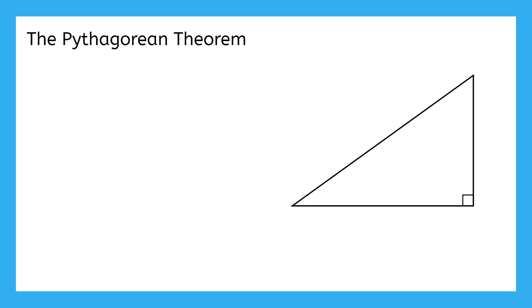Do you remember what a right triangle is? A right triangle is a triangle with a right angle, which is marked right here.